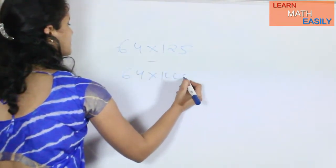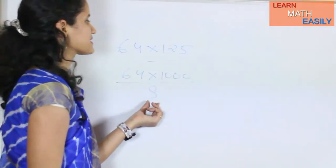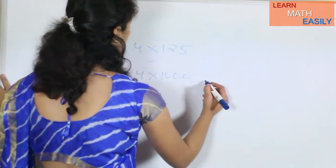Because 1000 divided by 8 is nothing but 125. So my answer is 64000 divided by 8, which equals 8000.